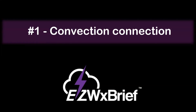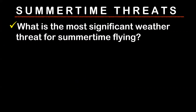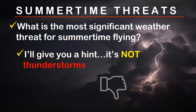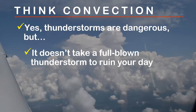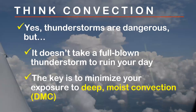First up is convection connection. For everyone in the audience: what is the most significant weather threat for summertime flying? Before you answer that, I'll give you a hint — it's not thunderstorms. Yes, thunderstorms are dangerous, but it doesn't take a full-blown thunderstorm to ruin your day. The key is to minimize your exposure to deep, moist convection, or DMC. That's a term I would much rather pilots use than the word thunderstorm.